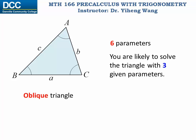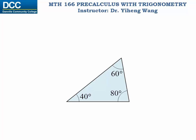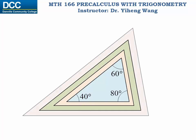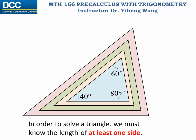However, there is an exception. If the three parameters that are given are all angles and we do not have any information on the sides of the triangle, then when we try to solve for the triangle, we will end up with a family of similar triangles, all with the same angles. Therefore, in order to specifically solve for a triangle, we need to know the length of at least one side.